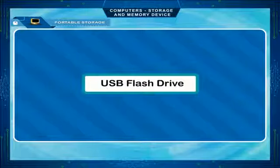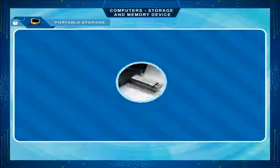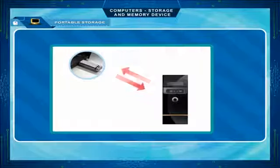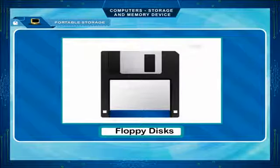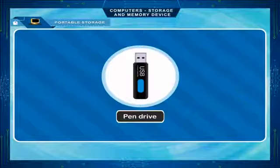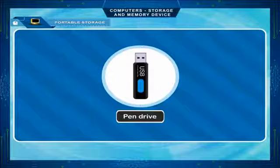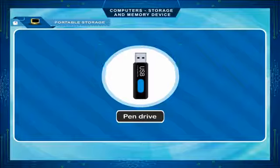A USB flash drive, popularly known as a pen drive, is a plug-and-play device used for copying and moving data from one computer to another. It has replaced floppy disks as it is very small, lightweight, and rewritable. It can be attached to any USB port and has storage capacity ranging from 2 GB to 32 GB or more. Flash drives are smaller, faster, and more reliable.